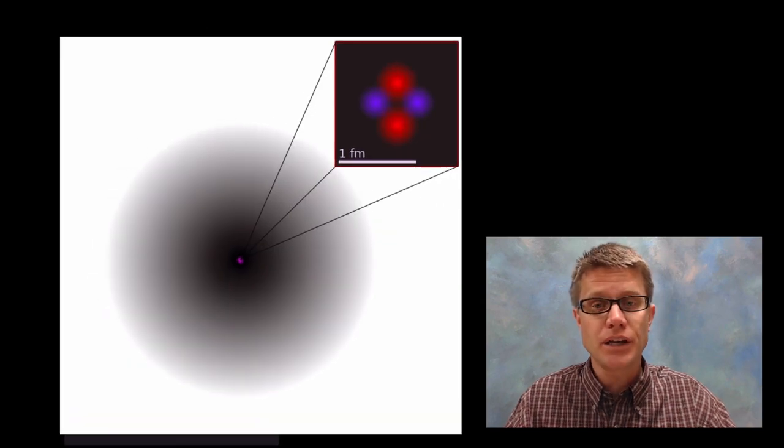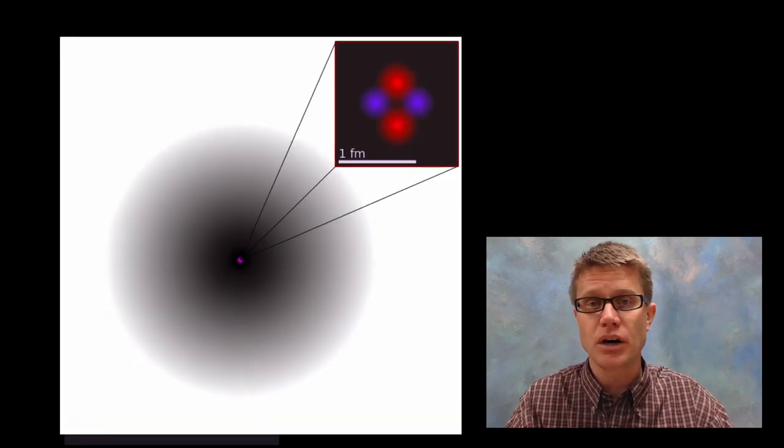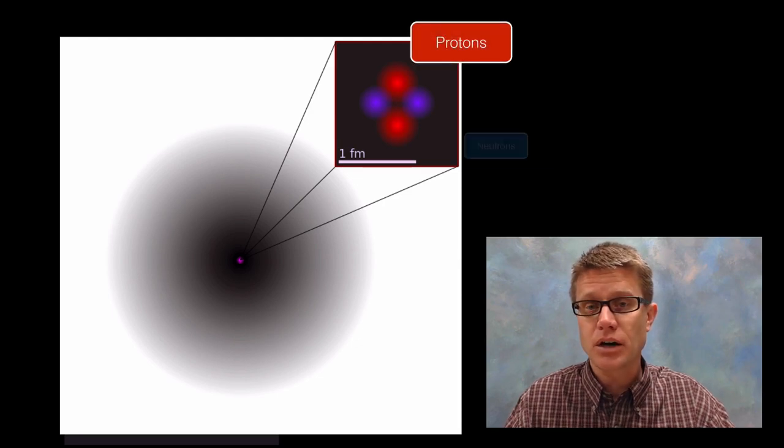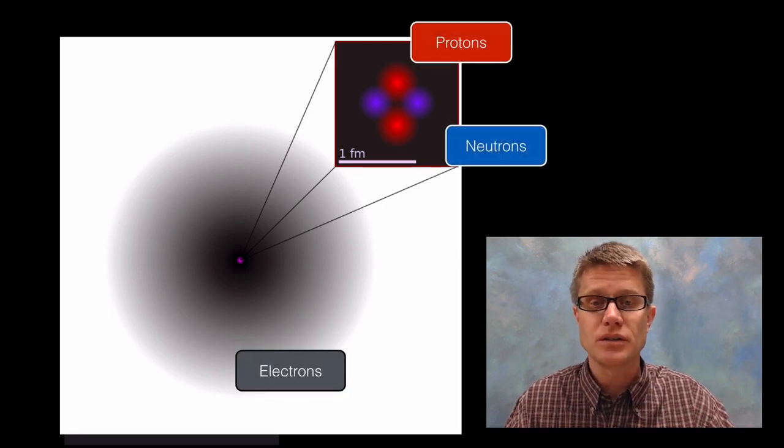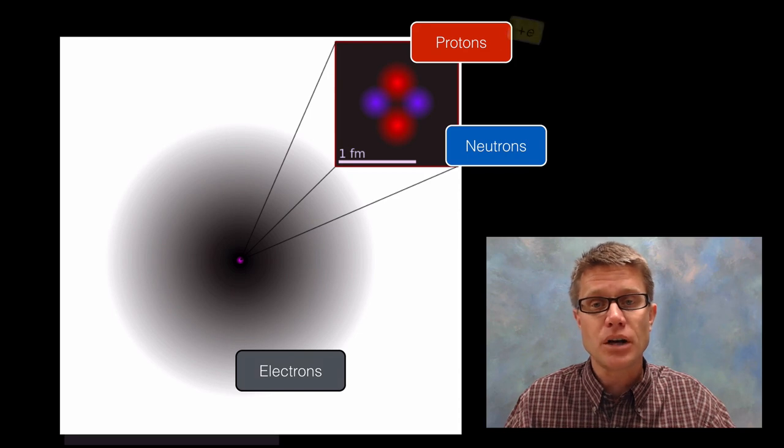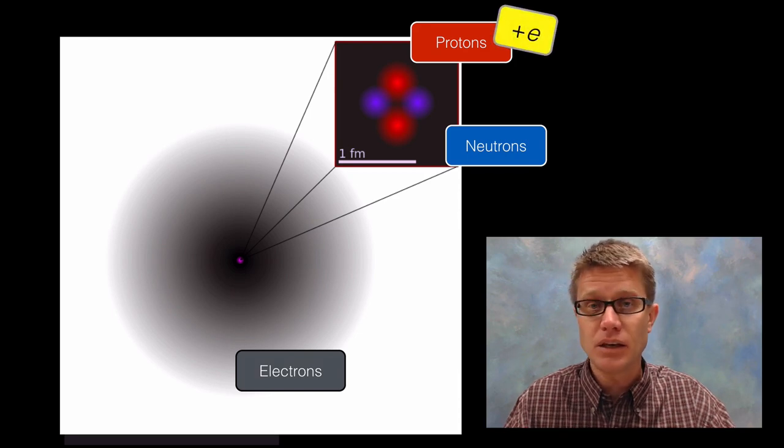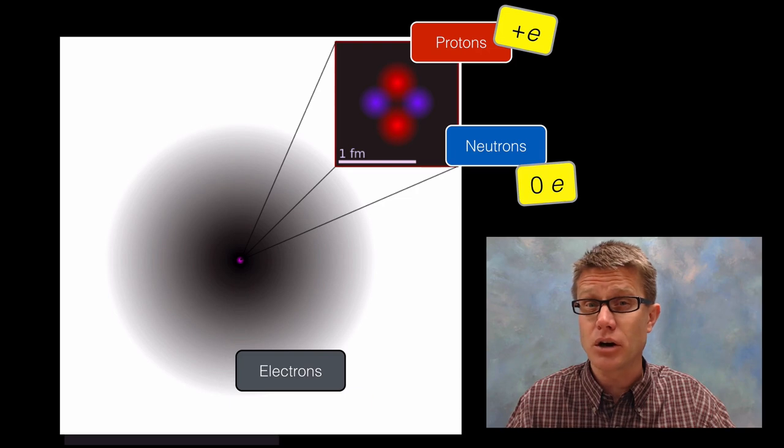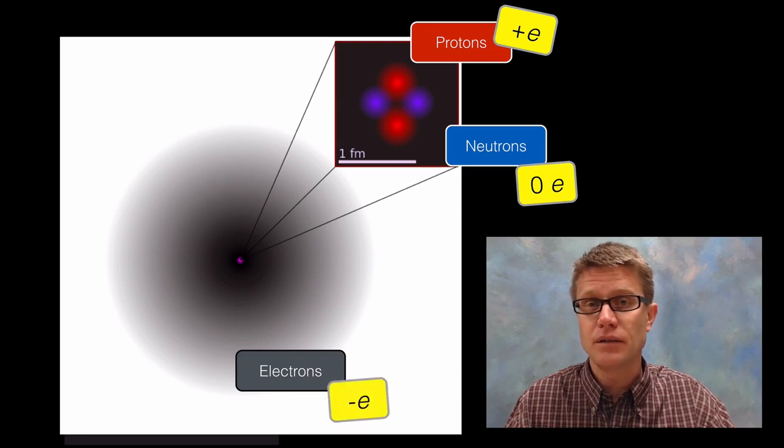And so again if we are looking at an atom what is it made up of? Protons, neutrons and electrons. So those protons are in the nucleus with the neutrons and then electrons outside. Protons have a positive e. Or a positive elementary charge. Neutrons have no charge. And electrons have a negative e.